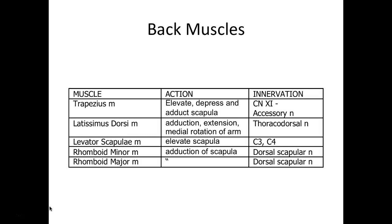For the majority of these muscles, I'm going to have you cross out the innervation on your list. I'm having you leave the innervation for trapezius, but for the other four muscles you want to write 'branch of the brachial plexus.'